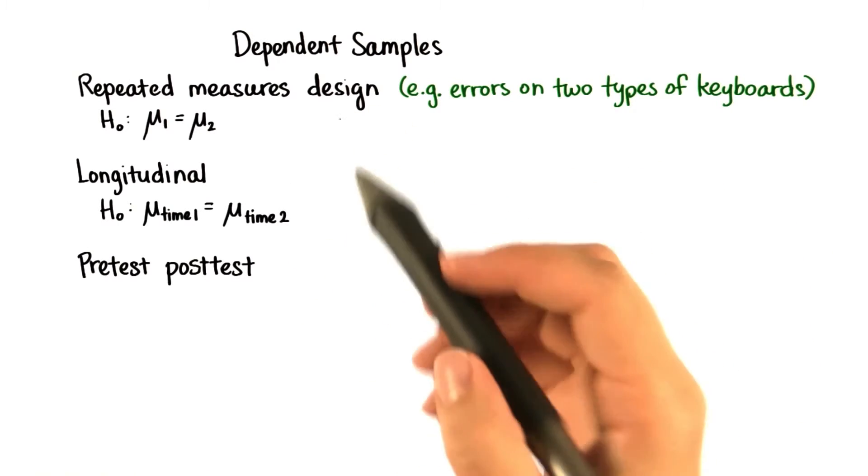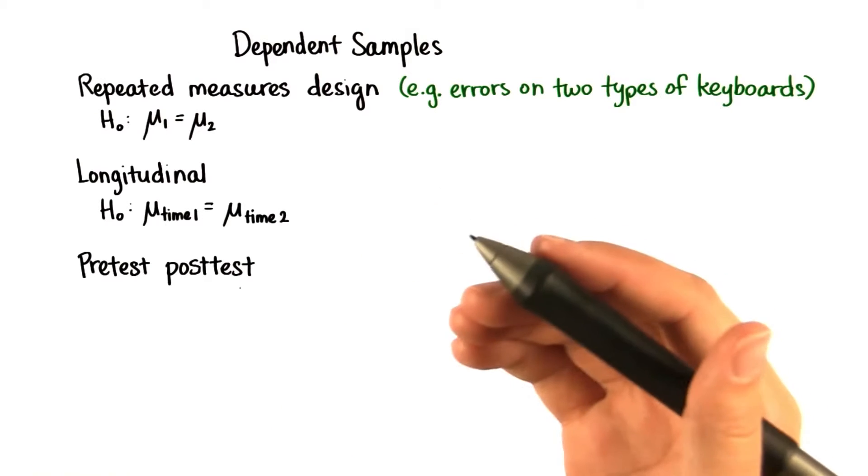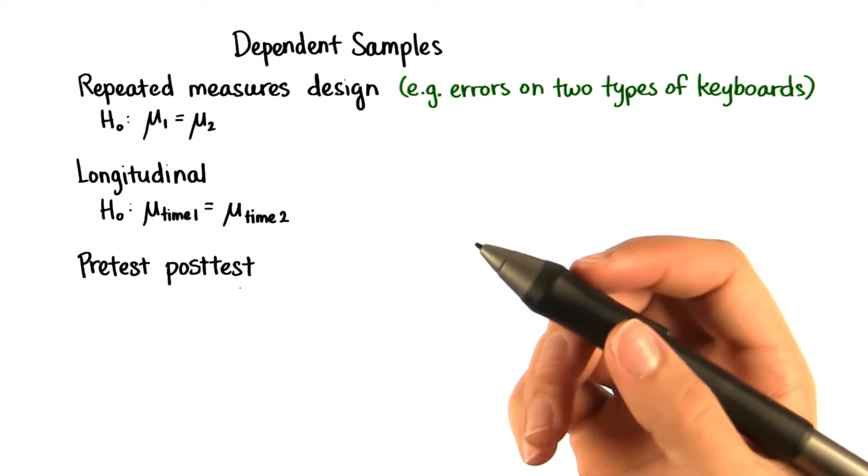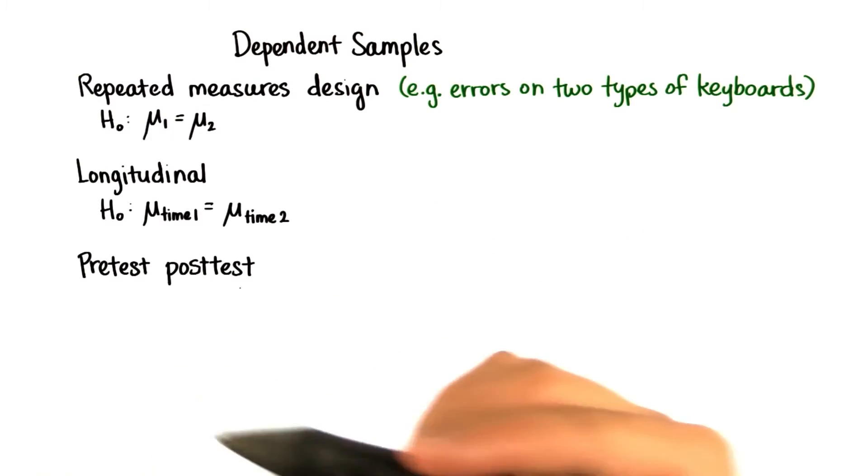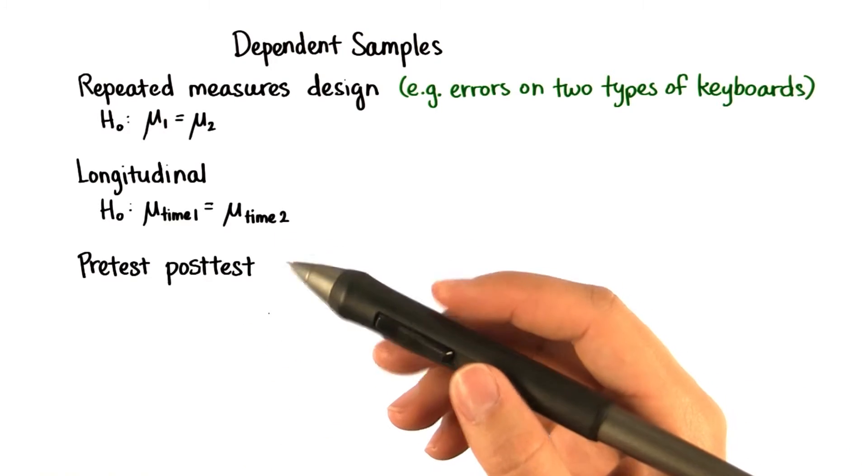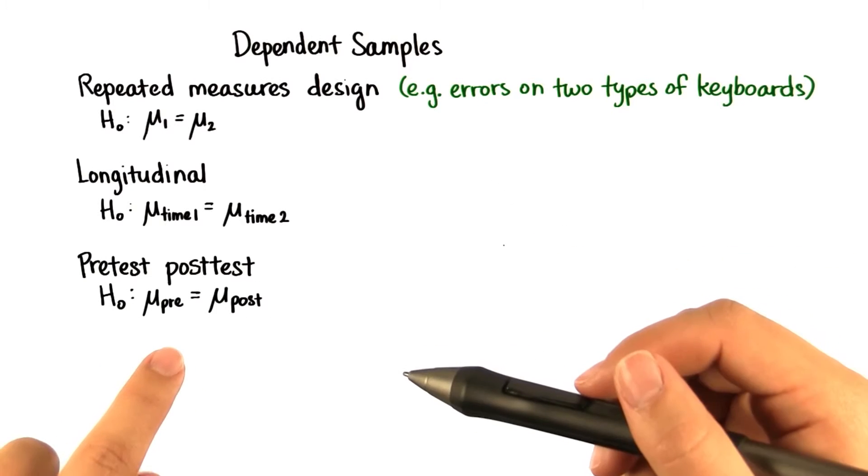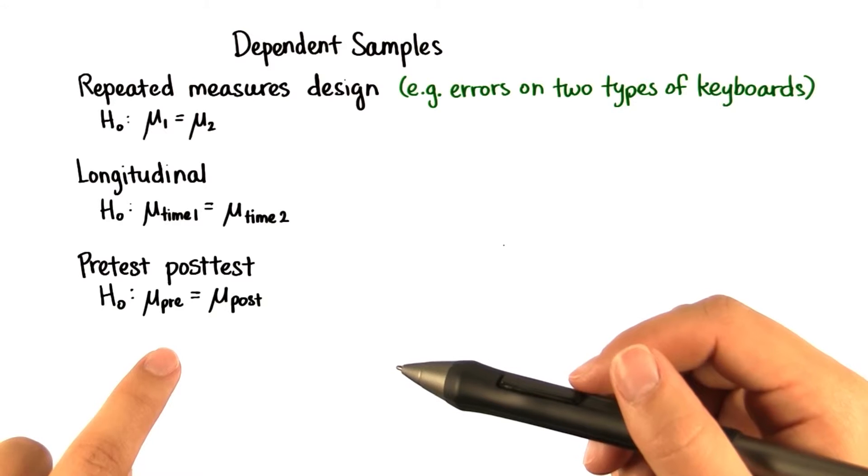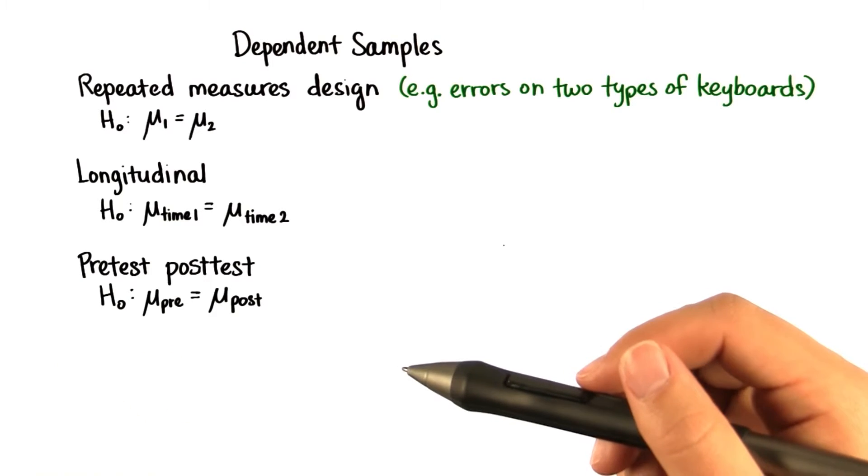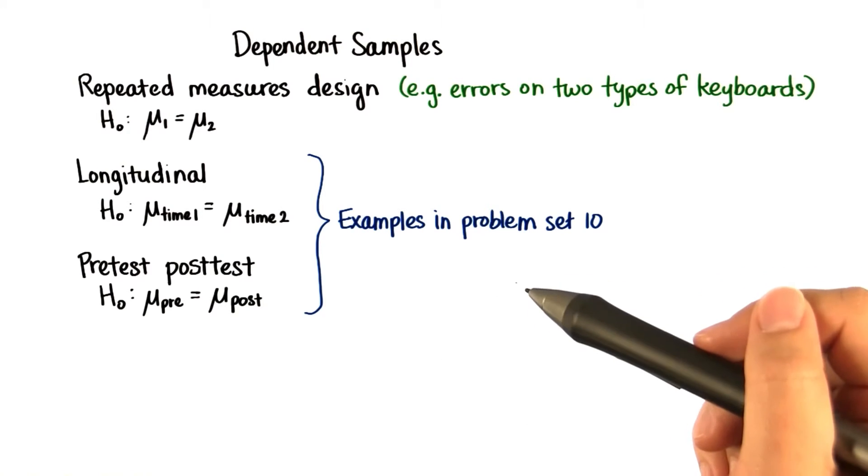A third type of dependent samples design is a pre-test post-test, where we measure a variable, implement some kind of treatment, and then measure the same variable for the same sample after the treatment to see if there was a significant effect due to the treatment. Again, the null hypothesis is the same: the variable won't significantly change before and after the treatment. You'll see examples of these two types of designs in problem set 10.